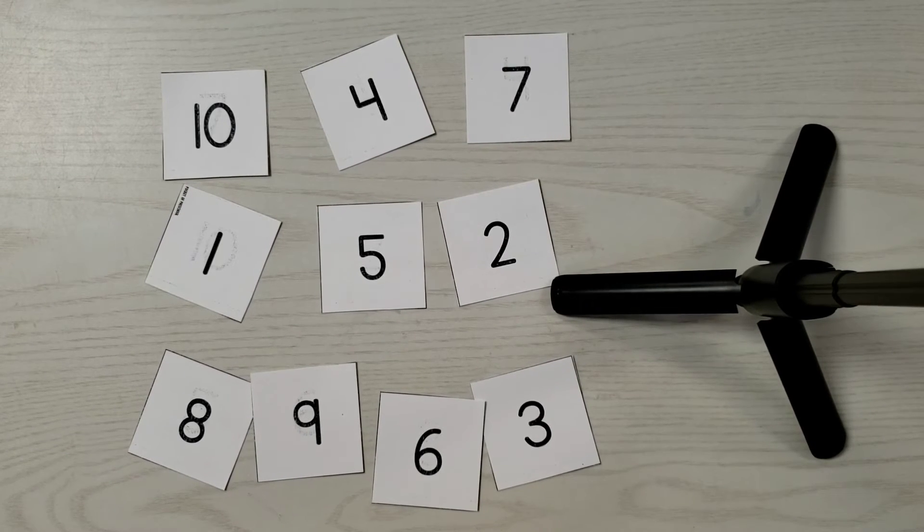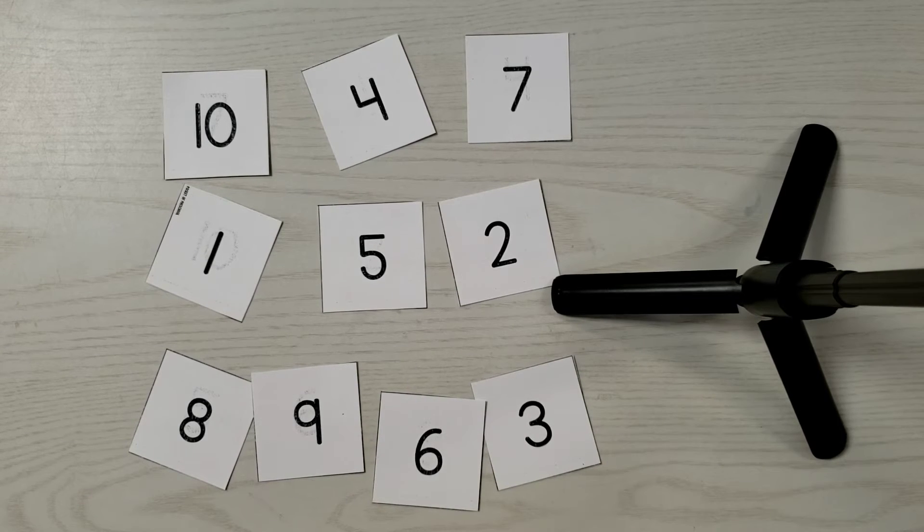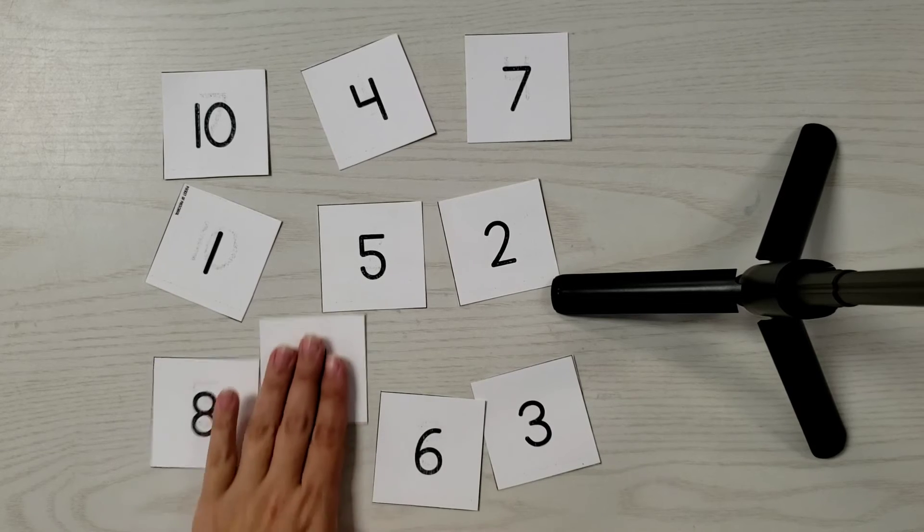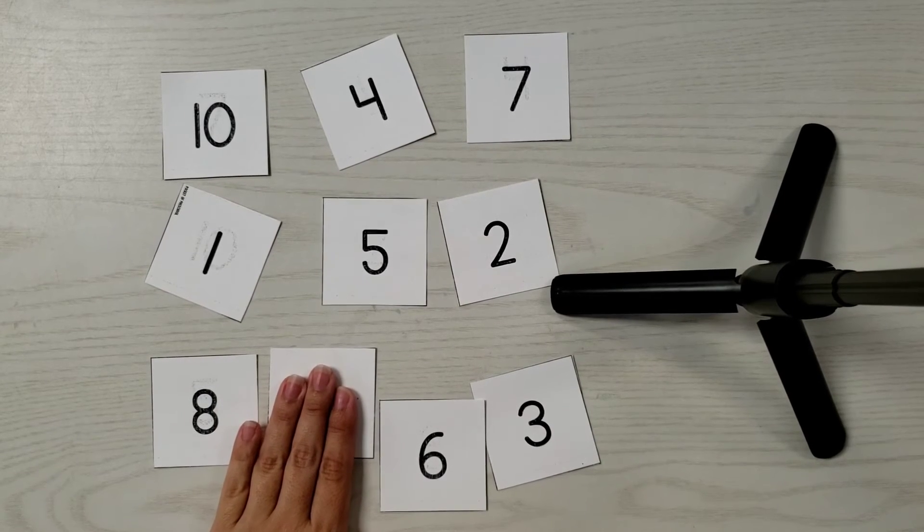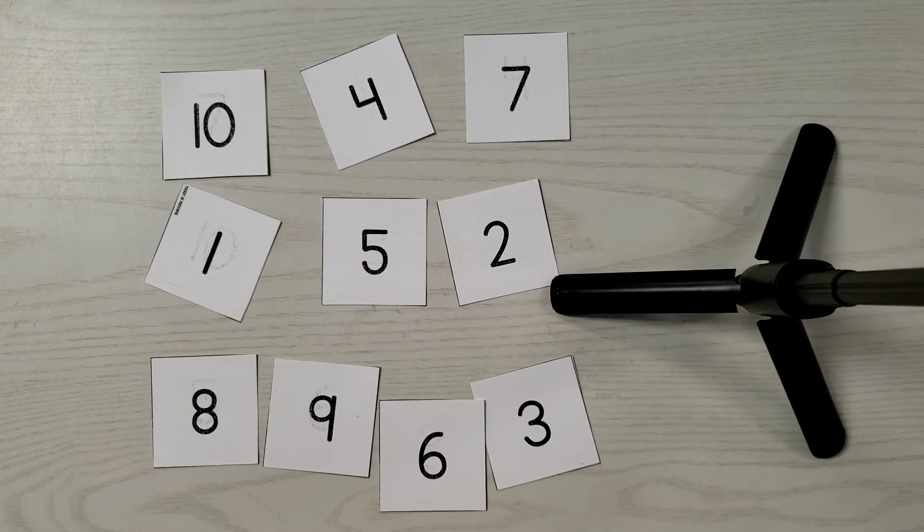And if your child taps the wrong number, just explain to them the name of the number they tapped and have them try again to find the correct number. So for example, if you called out four and your child touches nine, you'd want to say well that's nine, it kind of looks like four, but try again and see if you can find four.